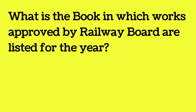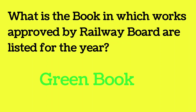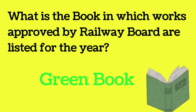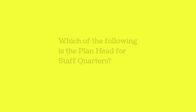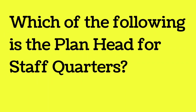What is the book in which works approved by the Railway Board are listed for the year? Works approved by the Railway Board are listed in the Green Book — green signal is given for work, hence Green Book.